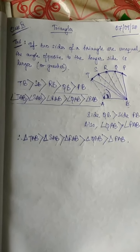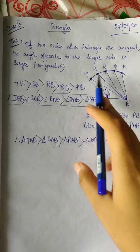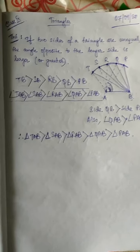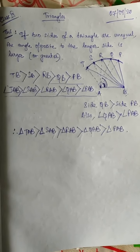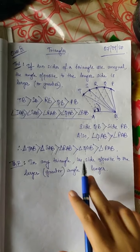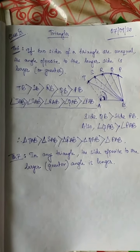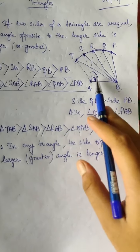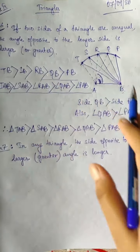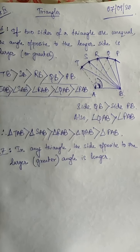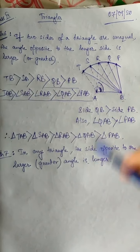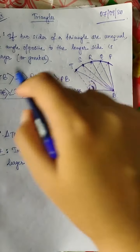So this is theorem 6 — as the side becomes longer, the angle also becomes longer. The converse of this is the next theorem, theorem 7. Theorem 7 says that in any triangle, the side opposite to the larger angle is longer. So the larger angle here is TAB, and the opposite side of it is TB, so TB is the longest side. This is just the converse of the previous theorem. Both theorems can be understood by this diagram.